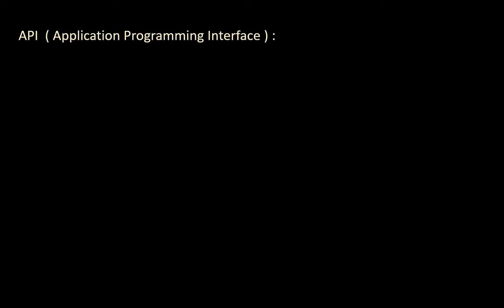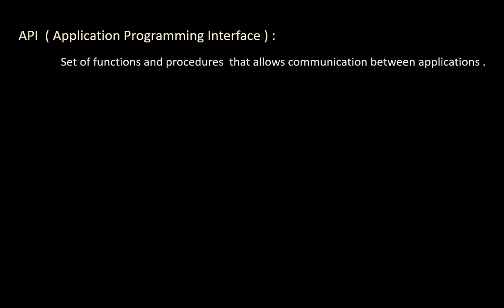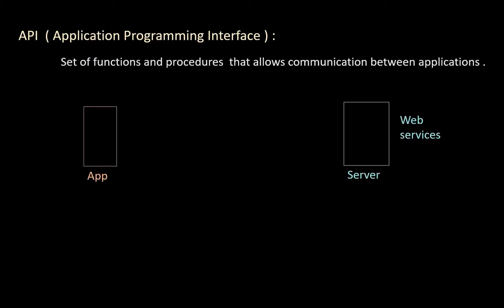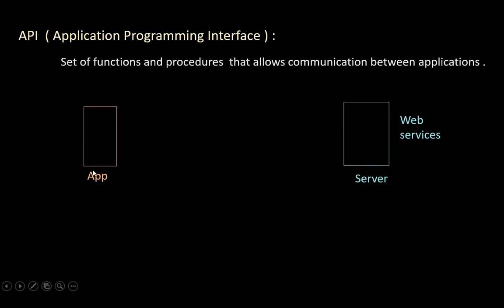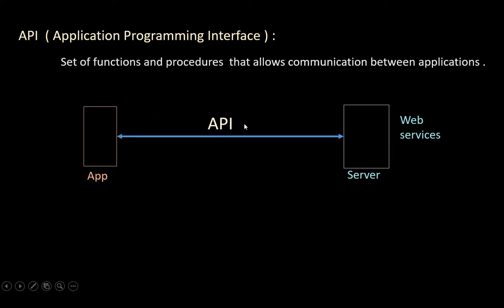API — Application Programming Interface — is a set of functions and procedures that allows communication between applications. So let's say here we have a web or mobile application and a server which provides web services. These two can communicate with each other by using an API. The application makes an API call to access a web service and based on that it gets a response.